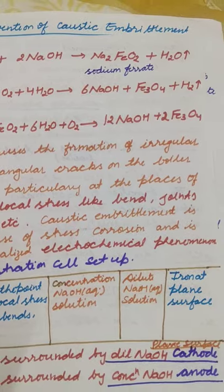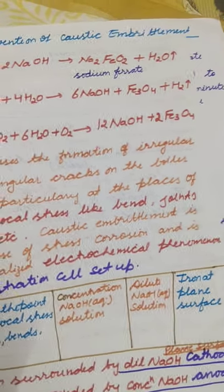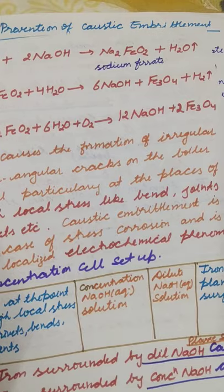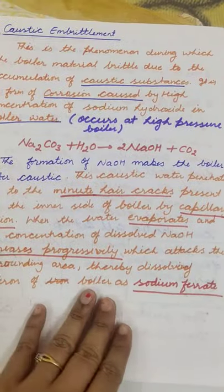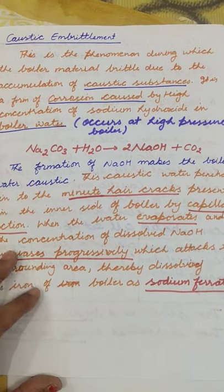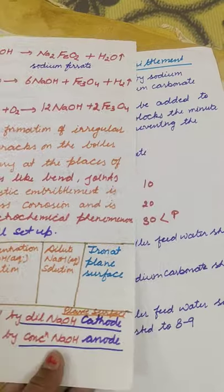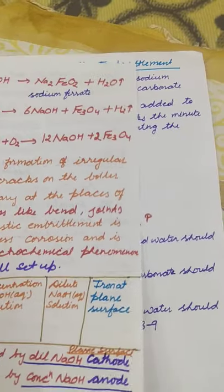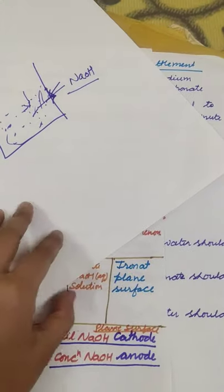Hello students, today we are continuing our lecture on caustic embrittlement. In the previous video, I gave you the introduction — that it occurs due to the caustic environment. Now we are going to study in detail what happens. I told you that there is a concentration cell involved.